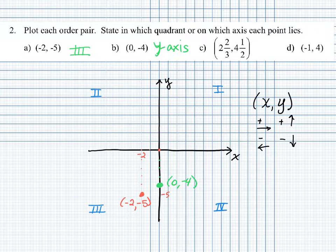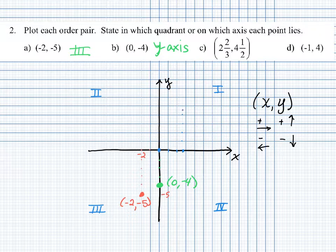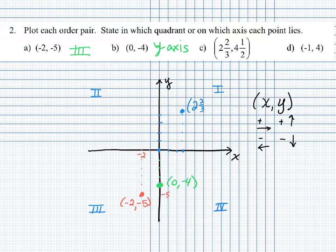The next point has fractions in it. We are locating the position two and two-thirds, four and one-half. Starting at the origin, we move to the right two and two-thirds in the x direction, then go up four and a half in the y direction. We label that point as two and two-thirds, four and one-half. This point is located in quadrant one.